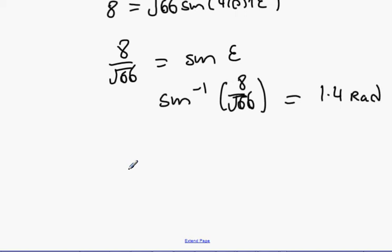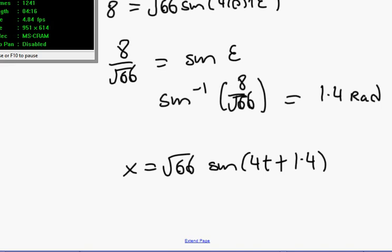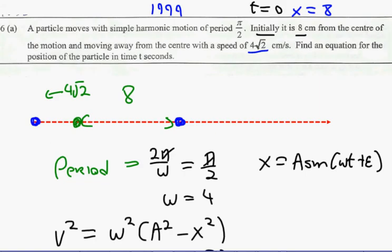So, this means that the full formula becomes √66 sine 4t plus 1.4.